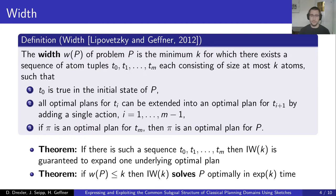So if pi is an optimal plan for tuple tm, then pi is also an optimal plan for p. Together with the definition of width come two theorems. The first states that if there is such a sequence t0 through tm, then the IW(k) algorithm is guaranteed to expand one underlying optimal plan. The second states that if the width of the problem is smaller than k, then IW(k) solves p optimally in time exponential in k. So if the width of a problem is large, one way to solve it is by cutting it into smaller pieces of small width.